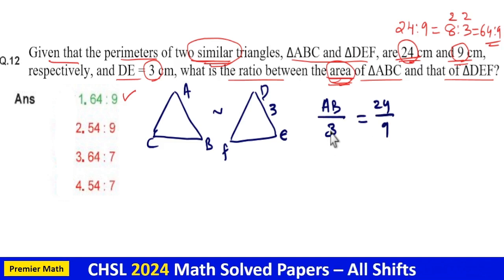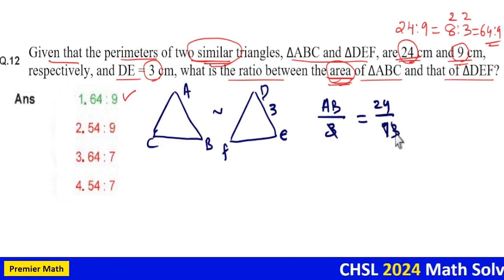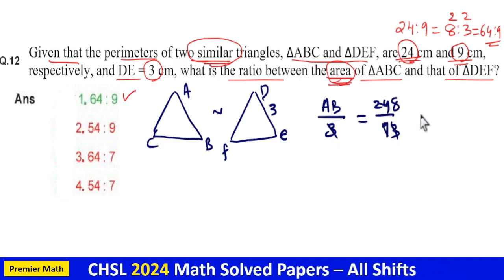Now you can see 3 goes 3 times in 9, 3 goes 8 times in 24. So AB is equal to 8.